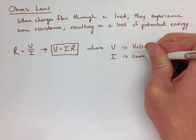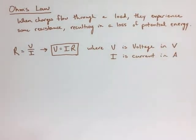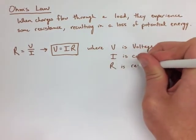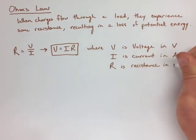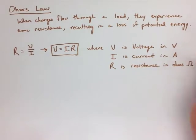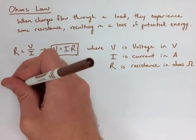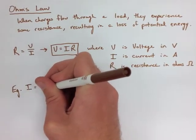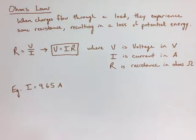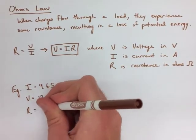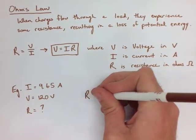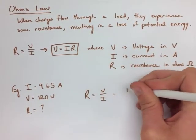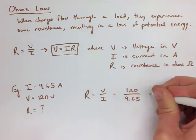Now if we look at the first example, we have a toaster oven which has 9.65 amps of current, and it's plugged into a wall with 120 volts. How much resistance does it have? Well, we write down our given and required information. We write down that resistance equals voltage over current. We take 120 and divide it by 9.65, and we end up with 12.4 ohms.